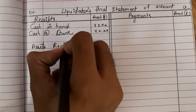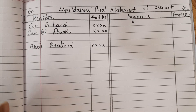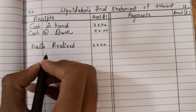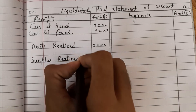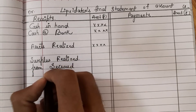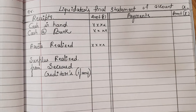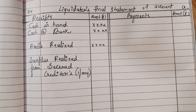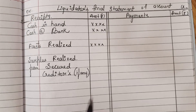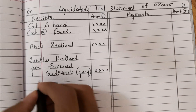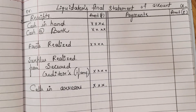Then all assets realized — whatever the value of assets as on the date of liquidation, all those assets will be written on the debit side. Next, surplus realized from secured creditors: suppose the creditor's value is 1 lakh and the machinery pledged is worth 1 lakh 20,000 — then 20,000 is a surplus from secured creditors. Next, calls in arrears — amounts yet to be received on shares — that is also an asset. These are the items on the asset (debit) side.